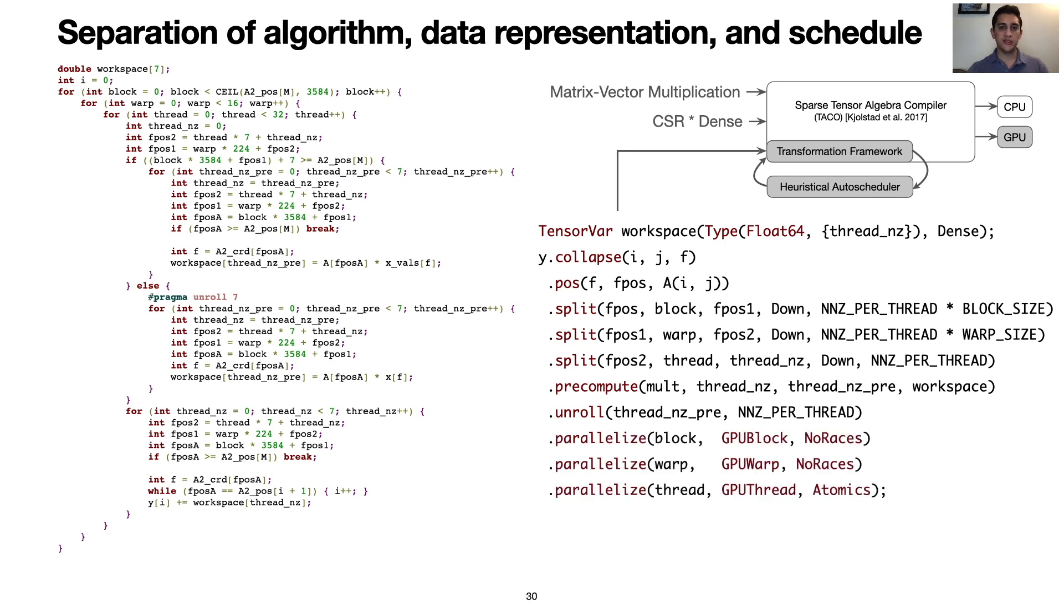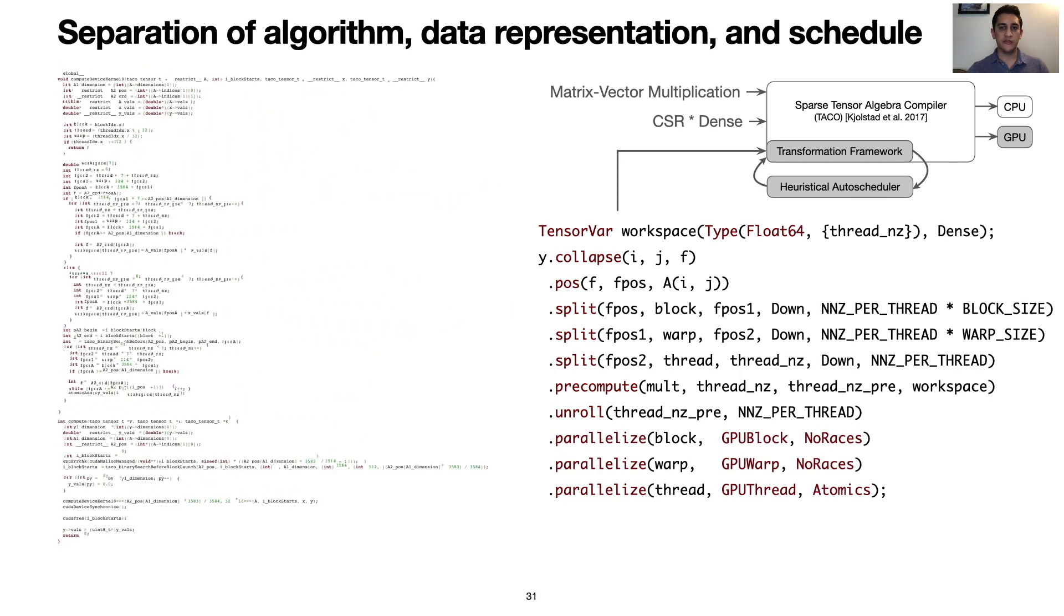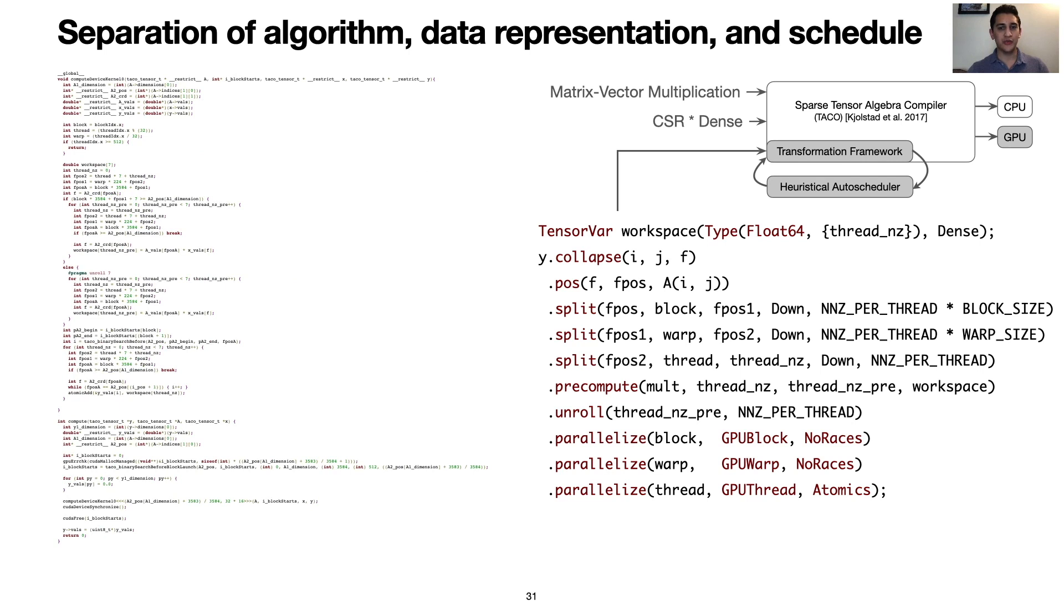Finally, we can parallelize this code into an optimized GPU kernel. There's a lot of code now, so you can't see the details. But trust me, it's much more fun to write the schedule on the right than to try to write the code on the left without any bugs. Especially for problems with higher dimensional tensors, it can be near impossible to write one of these kernels correctly, let alone trying multiple codes to see which strategy is faster.